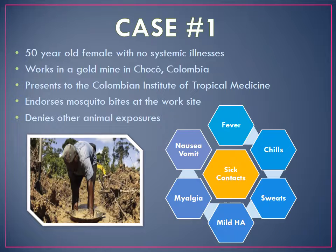Case number one. This is the case of a 50-year-old female with no pertinent past medical history and no known systemic illnesses who presented to the Colombian Institute of Tropical Medicine. She complained of fever, chills, sweats, mild headache, myalgia — particularly back pain — nausea, and vomiting since two to three days prior to presentation. She also reported sick contacts at her place of work with similar symptoms. Of note, she worked at a gold mine in a rural area of Colombia called El Choco. She also endorsed mosquito bites, but denied any other significant animal exposure.